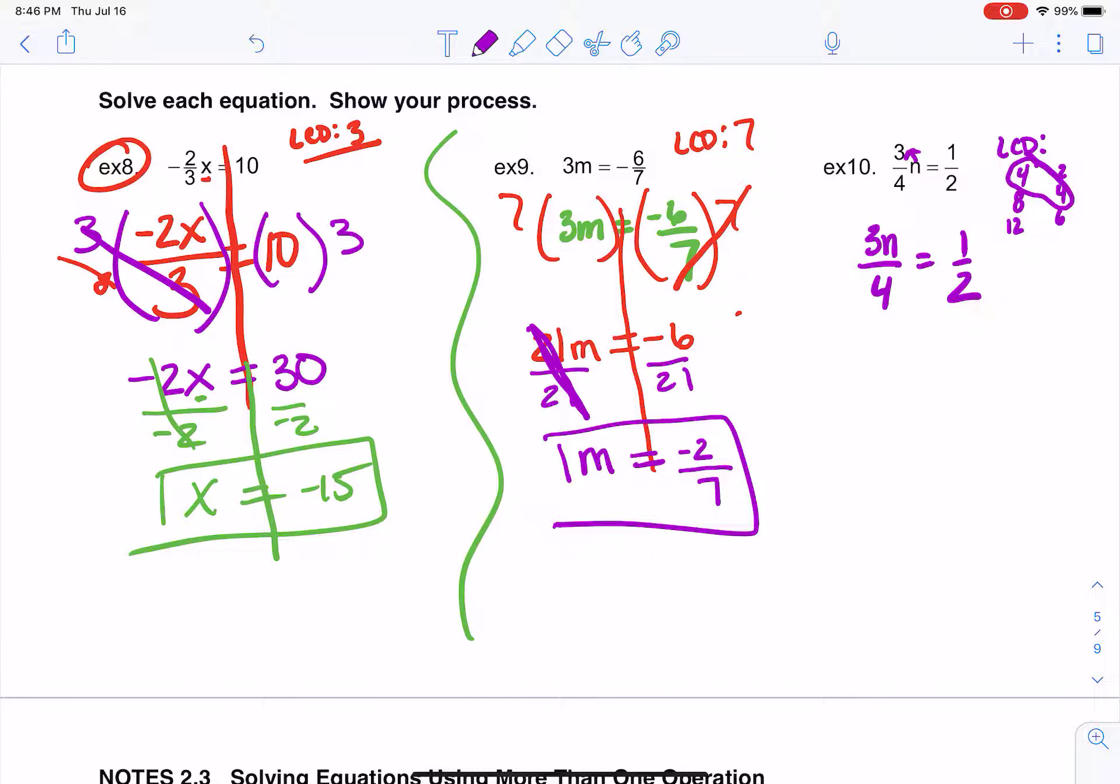So I'm just going to do my multiples to get that LCD. So that means I'm going to multiply everything in this equation by 4. So I'm going to multiply this by 4 and I'm going to multiply this by 4. Those go away. I'm left with 3n equals... Now I'm going to do 4 divided by 2. Because remember, I'm multiplying this by the top. So this is 4 times 1 is 4, divided by 2 is just 2.